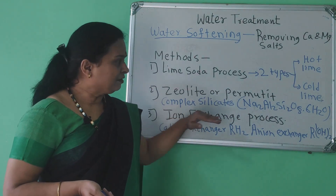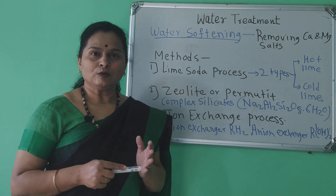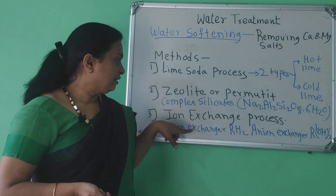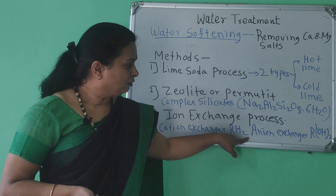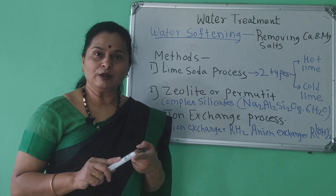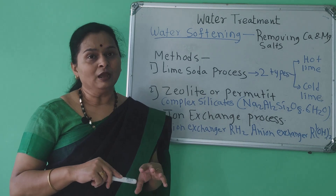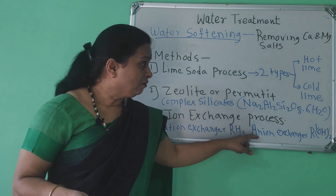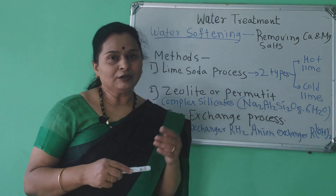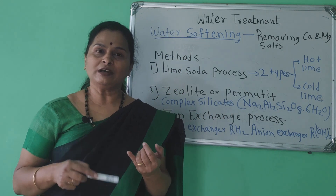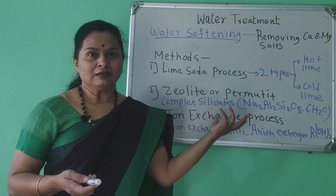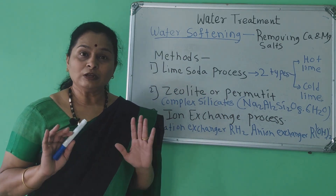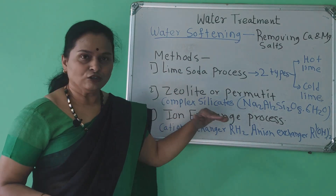The third method is the ion exchange process. In this process, cations and anions are replaced by resin ions. Cation exchangers with H+ groups replace Ca²⁺ and Mg²⁺ ions to remove hardness. The anion exchanger R–O⁻ removes anions such as chlorides and sulfates, with OH⁻ ions replacing Cl⁻ and SO₄²⁻ ions, making the water totally soft.